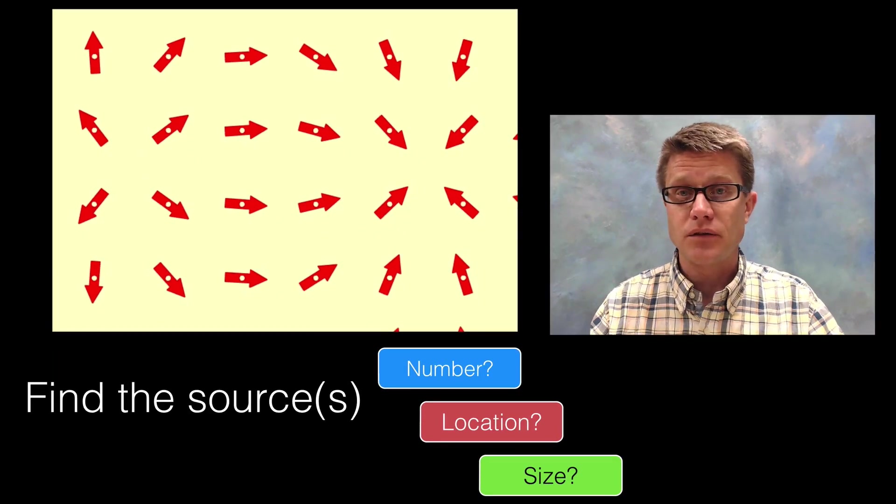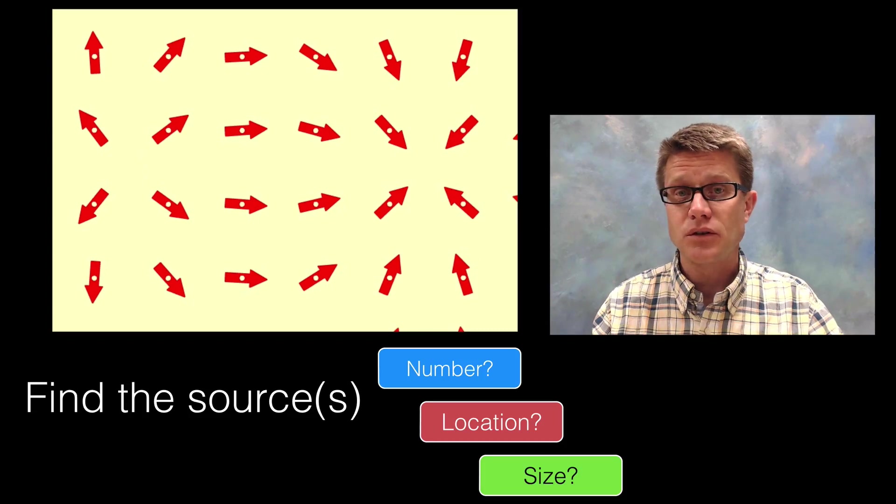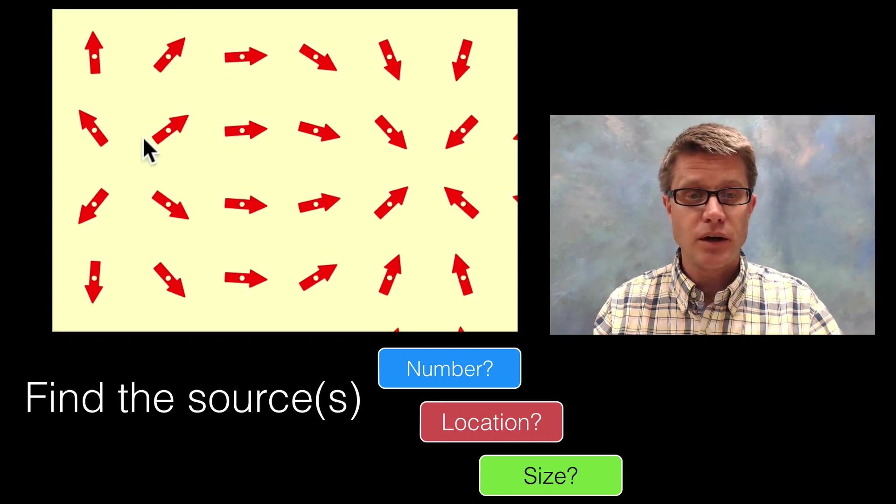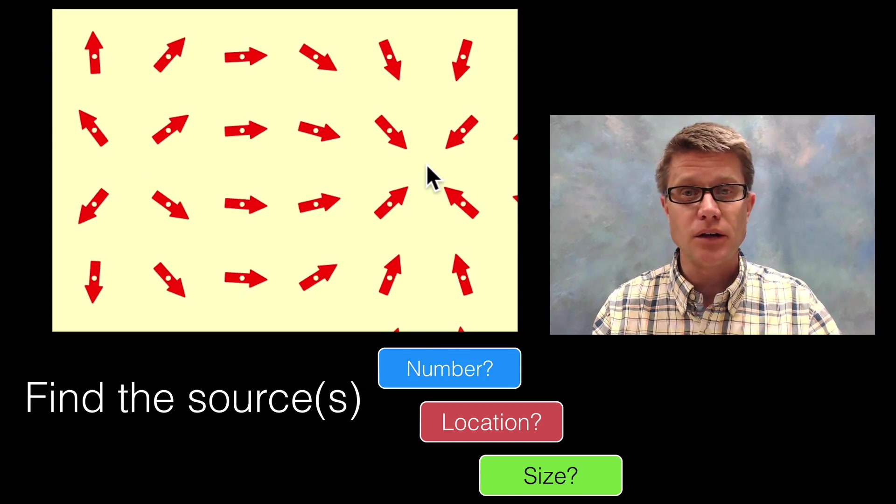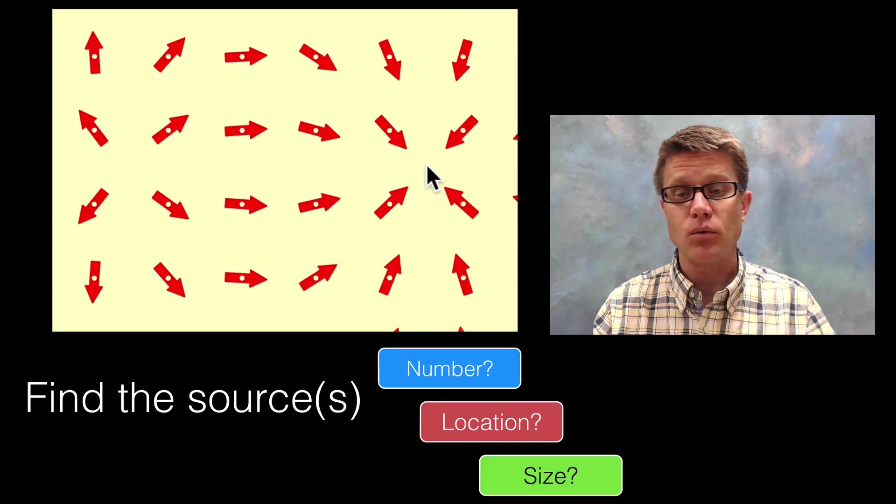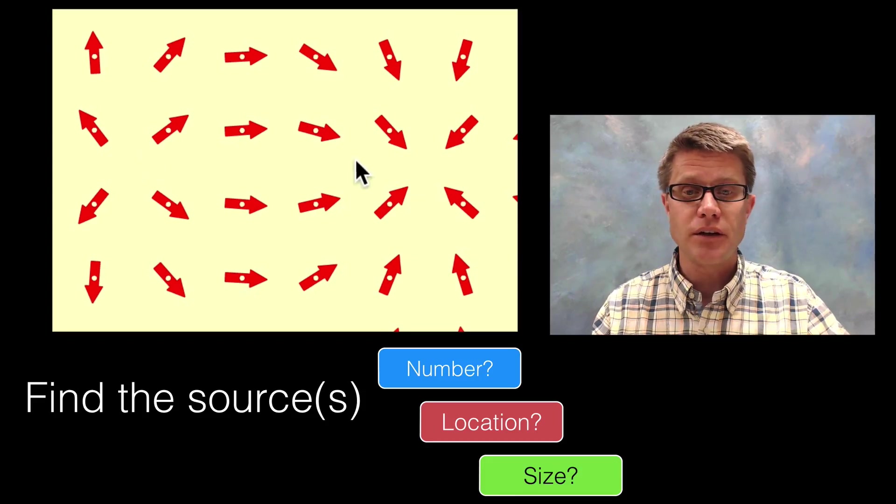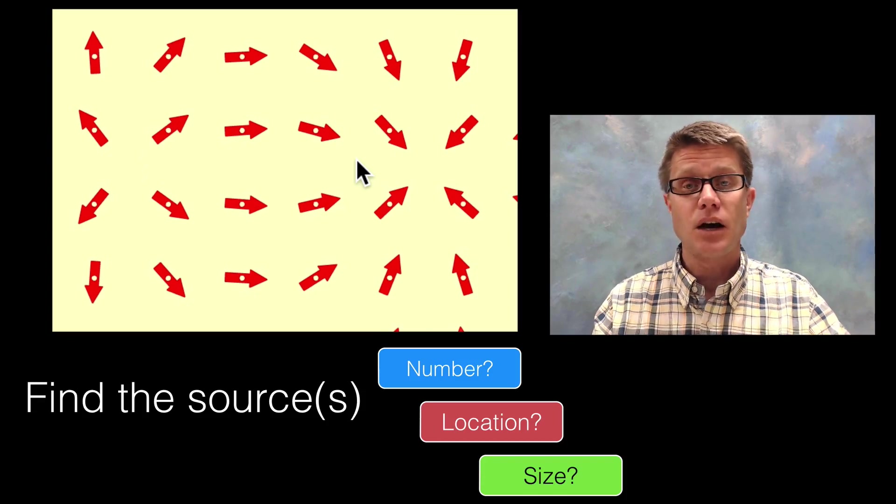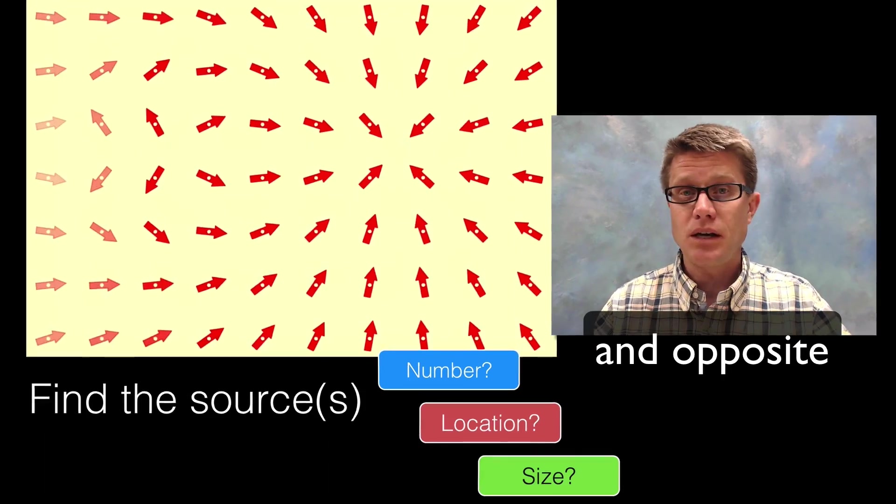If we move to another vector field, how many sources do you see? I see one right here and another one right over here. Again, looking for areas where all the arrows move away or move towards that one point. Since all the arrows are of about the same density I would say they both have equal charge.